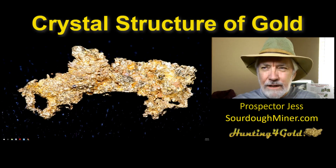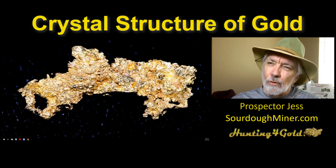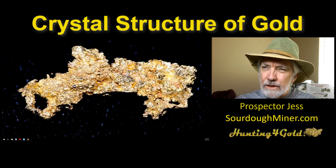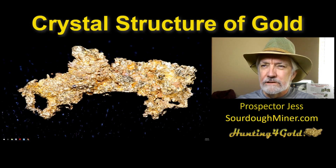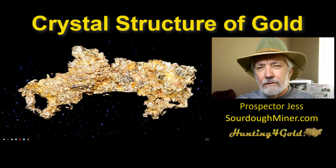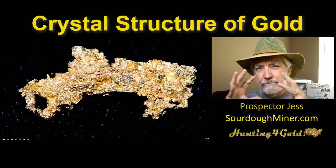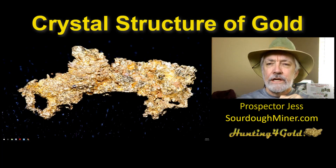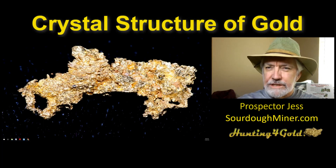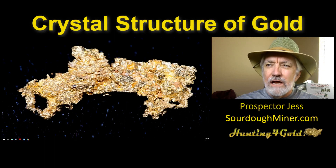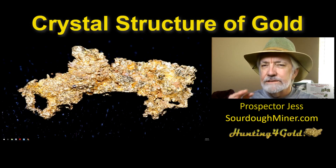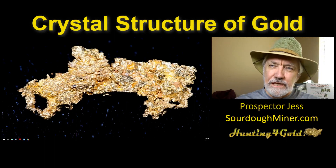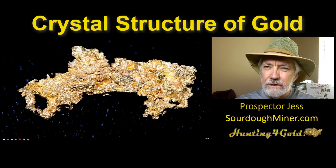It looks almost like pyrite, but it's not. It looks almost like foil, but it's not. It has these structures throughout, and every once in a while you'll see a little chunk of remaining or residual quartz that was with the crystal, because the crystal was etched out. This gold was etched out of quartz and gave this crystalline structure. Notice how it's not rounded or anything like that - that's a significant thing we'll talk about in a minute.